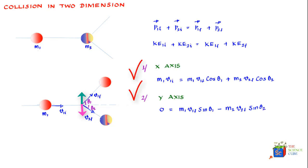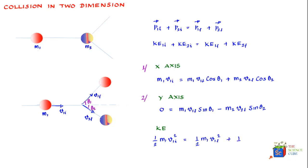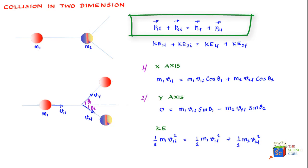These two equations hold true for a collision where there are no external forces acting on the system. If the collision is elastic, kinetic energy is also preserved, so we write: half m1 v1 initial squared equals half m1 v1 final squared plus half m2 v2 final squared. We don't split kinetic energy along x or y components because it is a scalar quantity. To sum up, in two-dimensional motion with no external forces and an isolated system, linear momentum is conserved before and after the collision.